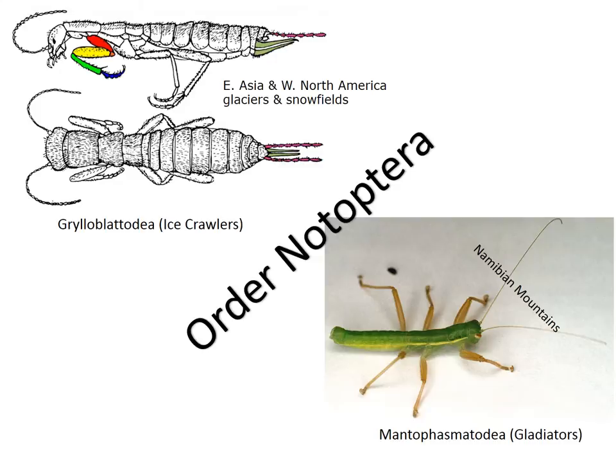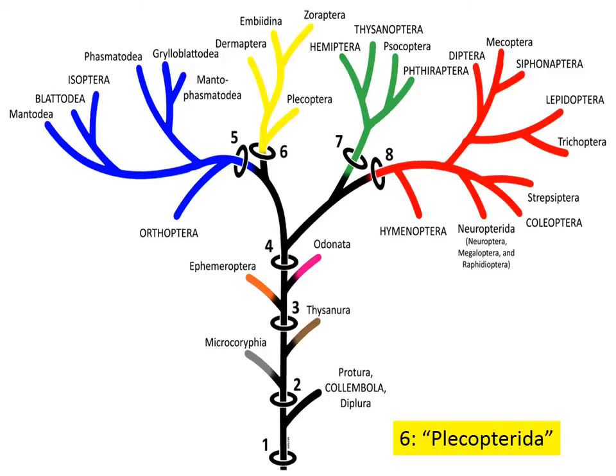Recently, these two orders — or what formerly were orders — were actually lumped together into a single order: order Notoptera. This actually comprises, I guess you could say, the newest extant or living order of insects.